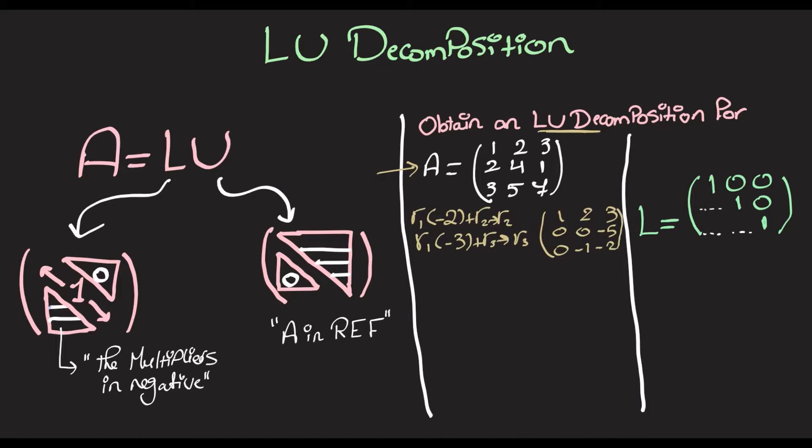Now, at this point, what we have to do is swap these two rows. So, row 2 swaps with row 3, and A is now 1, 2, 3, 0, negative 1, negative 2, 0, 0, negative 5. And it's now in reduced echelon form. So, we can just call this U.